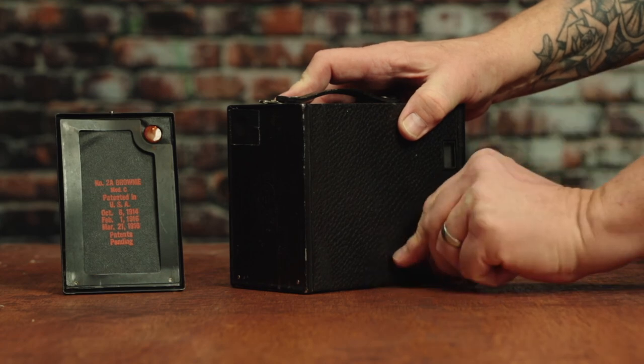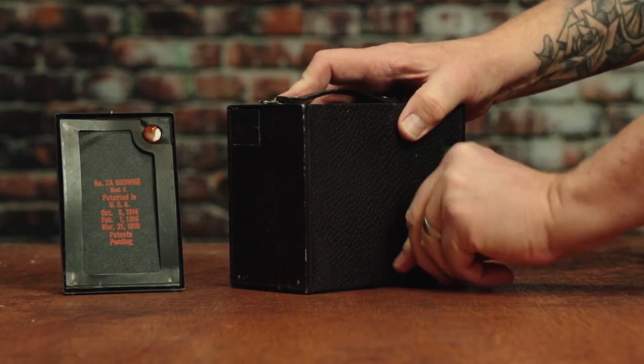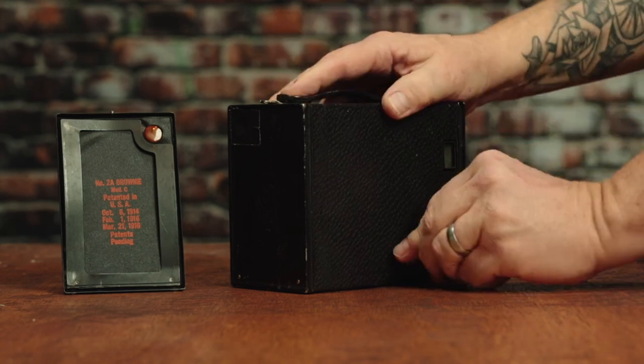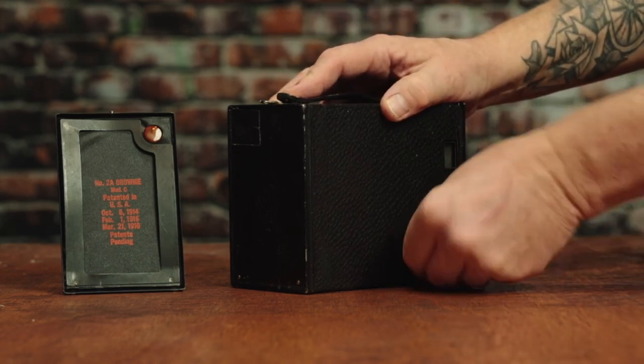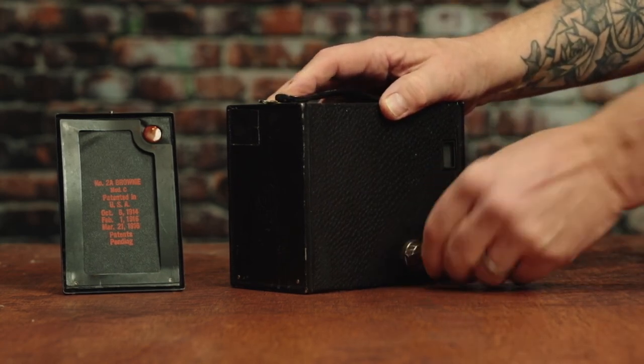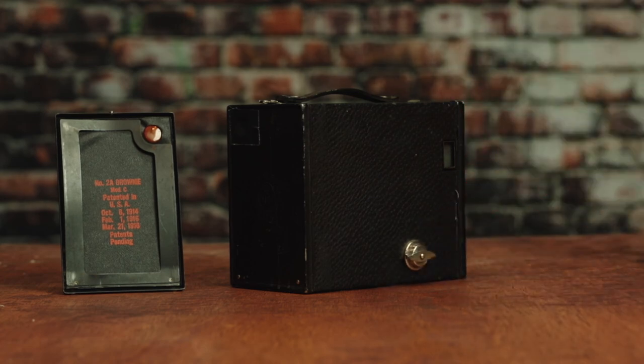Each time you expose a frame, you're going to wind this two and a half times. So five half turns. So one, two, three, four, five, ready for the next exposure. One, two, three, four, five. And those are all half turns ready for the next exposure.